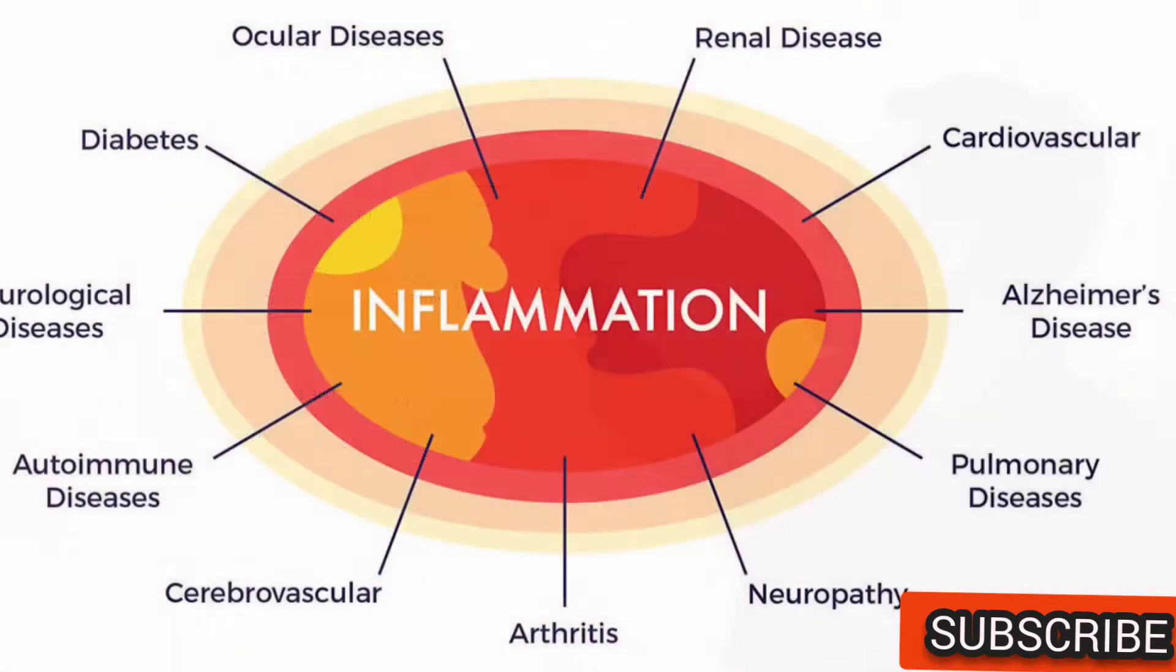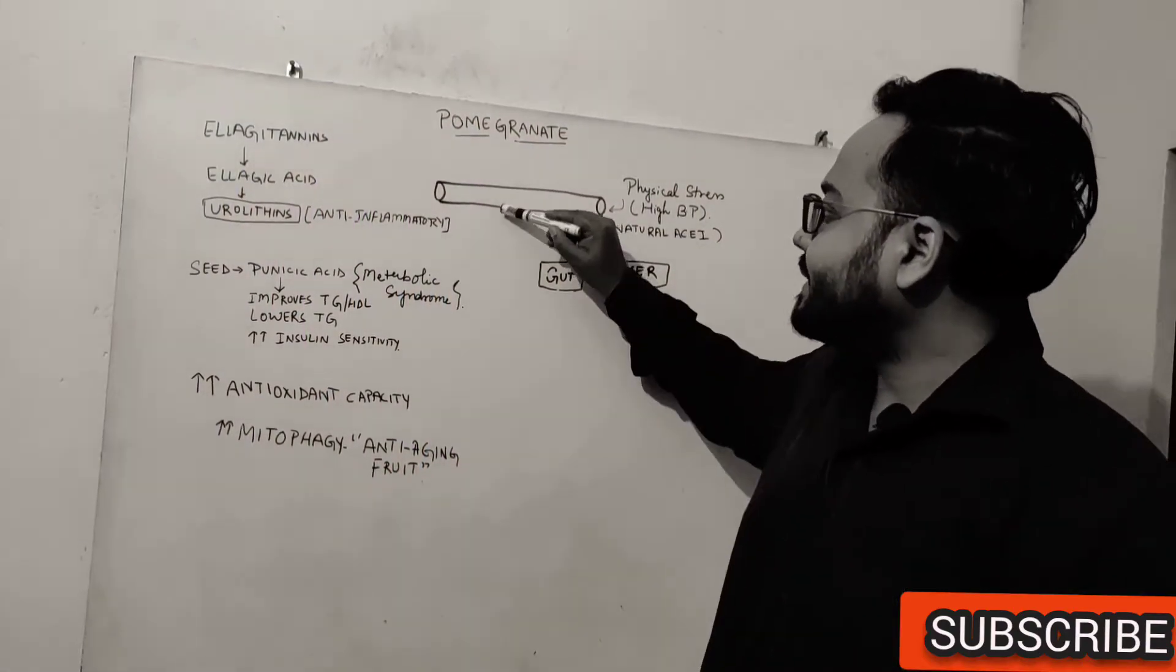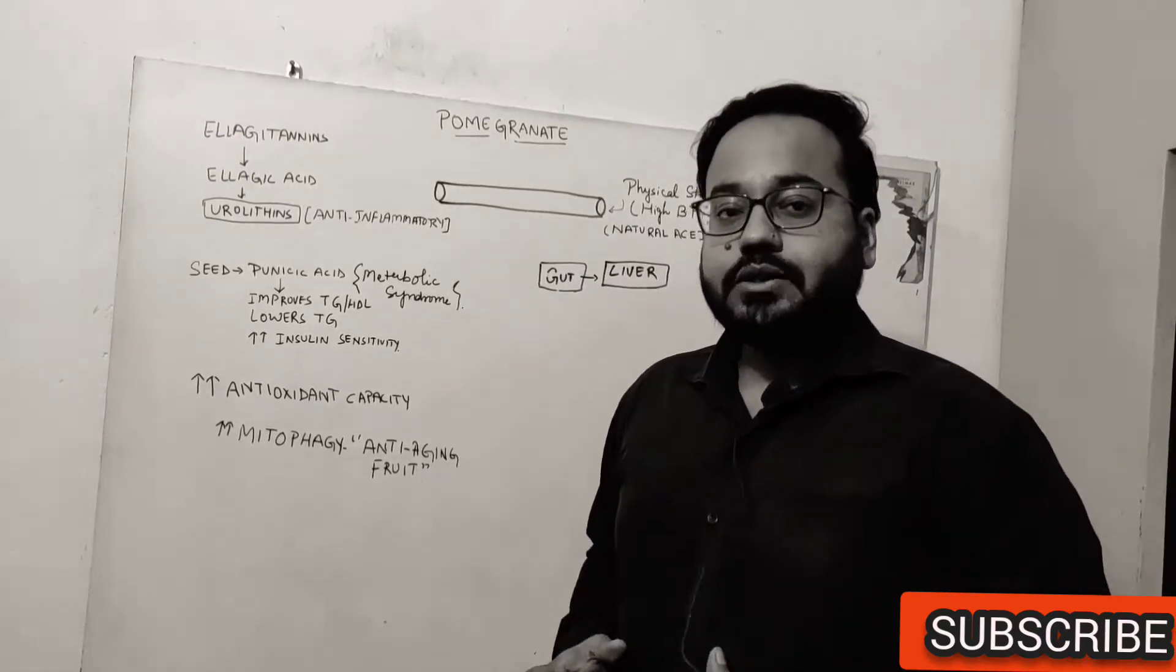So inflammatory cells are sent to eat up the cholesterol particles and it leads to development of foam cells. So over a period of time what can happen is this can completely block this blood pipe and completely shut down the blood flow.